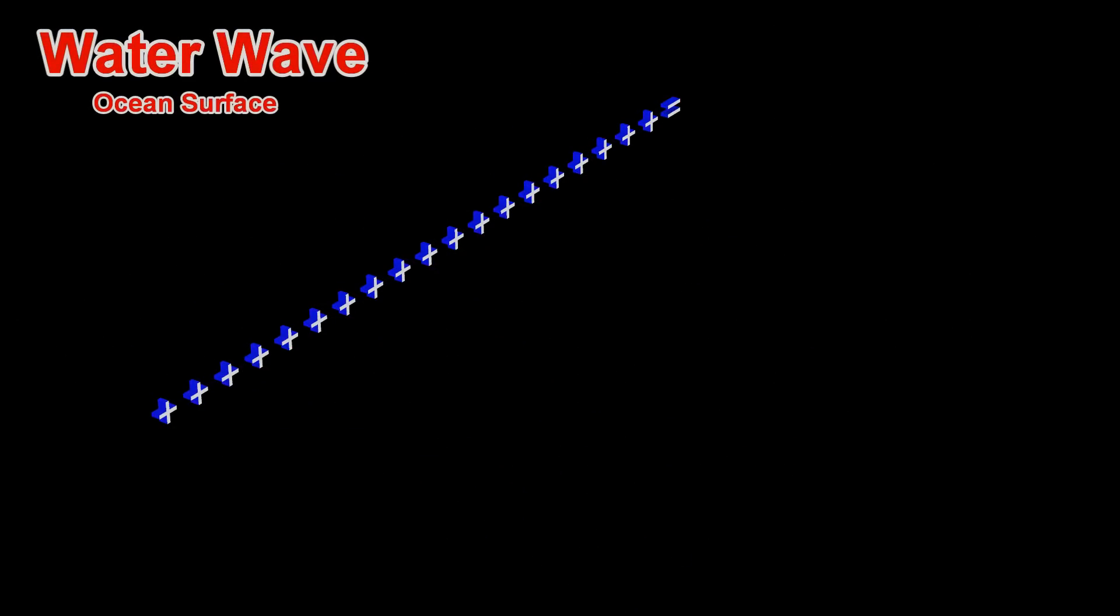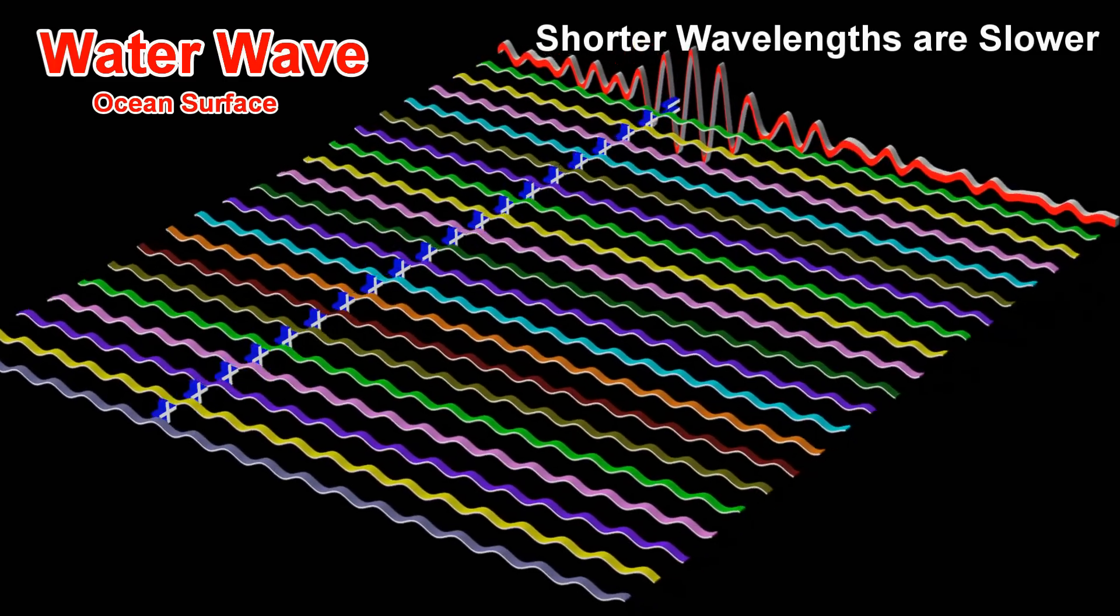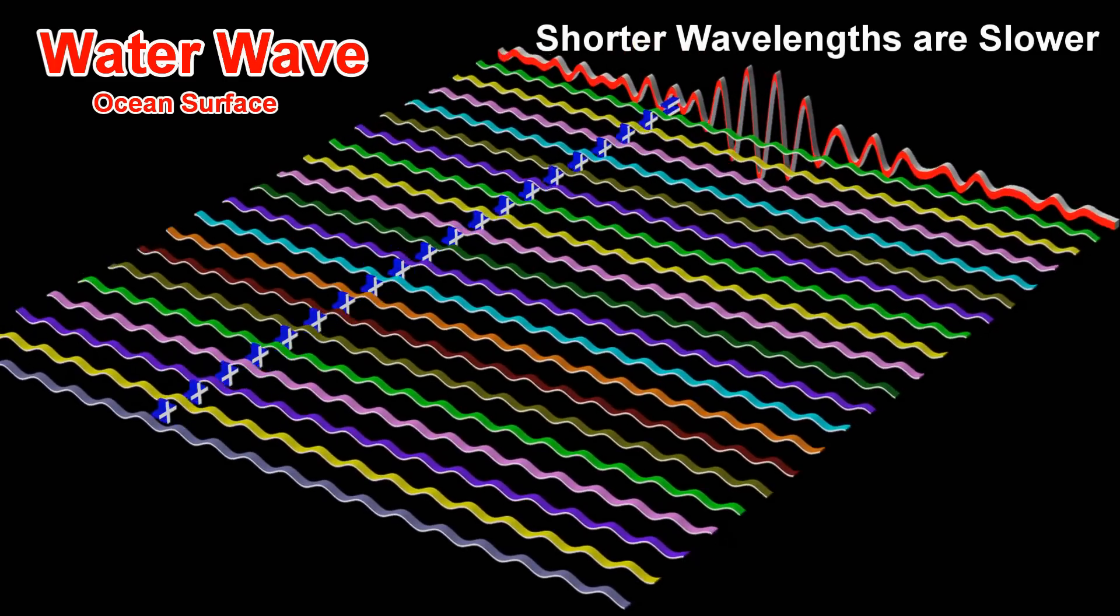For classical water waves on the surface of an ocean, the waves with a shorter wavelength have a slower phase velocity.